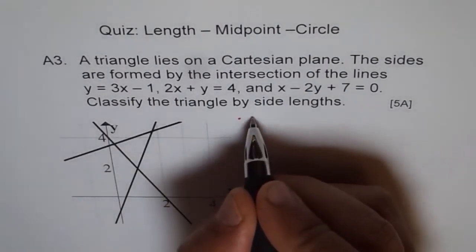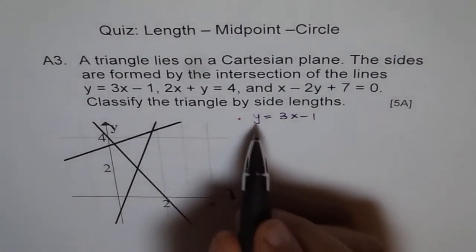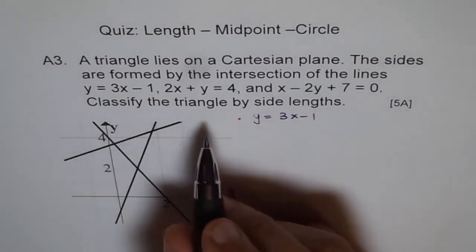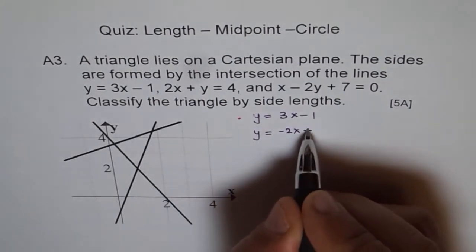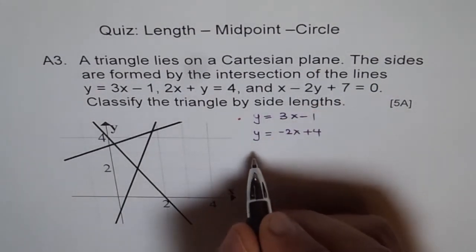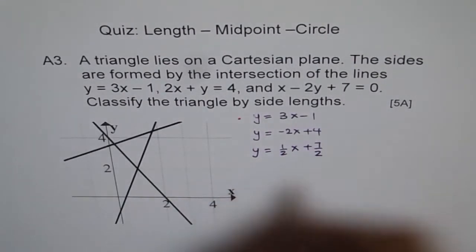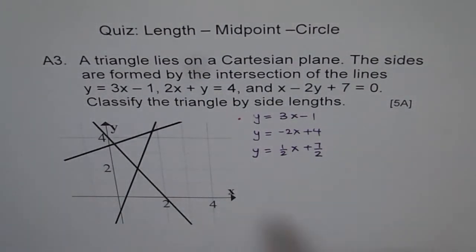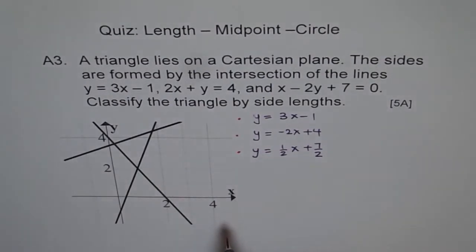The first equation, y equals 3x minus 1, is already in slope-intercept form and we know this line has a slope of 3. The second one we can write as y equals minus 2x plus 4. The third one, rearranging by taking y to one side and dividing by 2, gives y equals half x plus 7 over 2. Here you can see that the slope of line 2 and line 3 are negative reciprocals — minus 2 and one half — therefore these two lines are perpendicular, and so our triangle is definitely a right triangle.